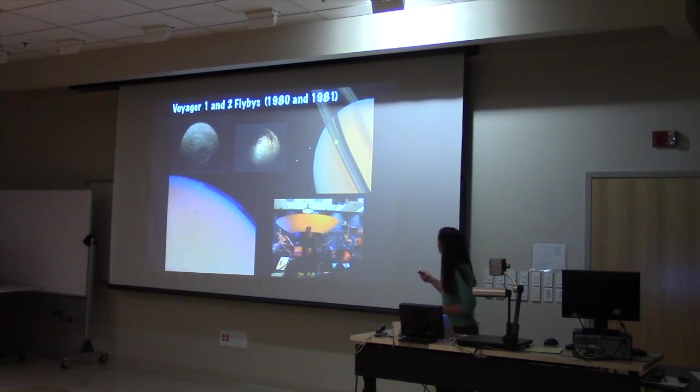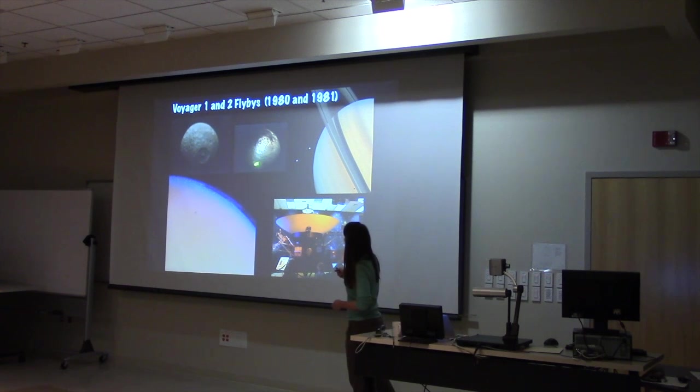You can clearly see some ring structure around Saturn, some moons, some smaller moons, and then some banded structure in the atmosphere of Saturn.